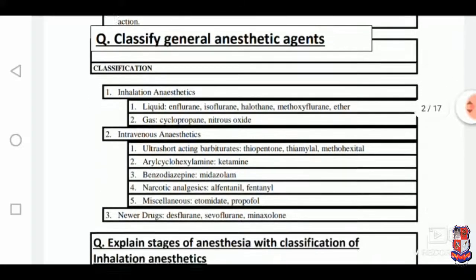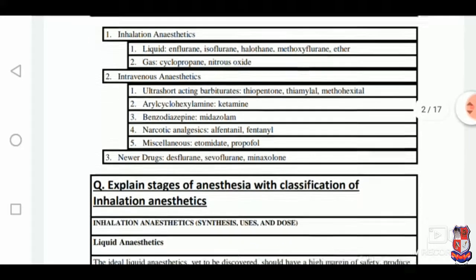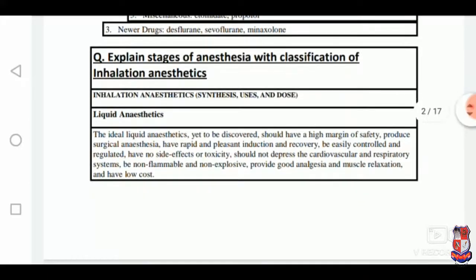Next is the classification of anaesthetic agents. First one is inhalation anaesthetics, second one is intravenous anaesthetics, and third one is newer drugs. Now, one question is: explain stages of anaesthesia with classification of inhalation anaesthetics. Students may produce the answer explaining the four stages and later in the answer they can write the classification of anaesthetic agents.